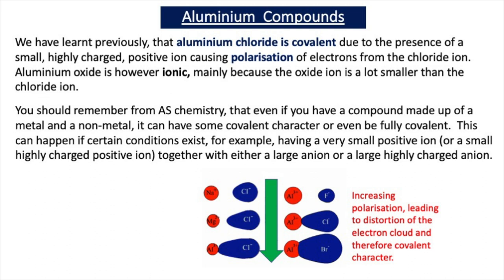Aluminium oxide is ionic, not covalent, because the oxide ion is a lot smaller than the chloride ion, so there is not as much polarisation or distortion of the electron cloud. It is ionic, but it does have some covalent character.